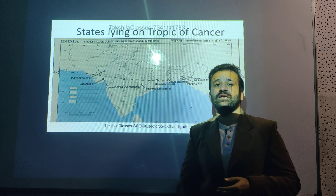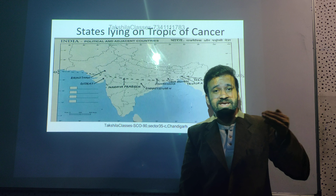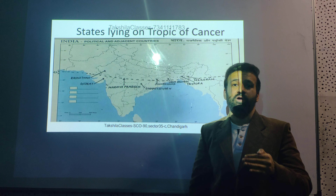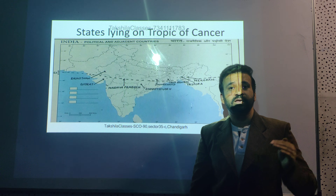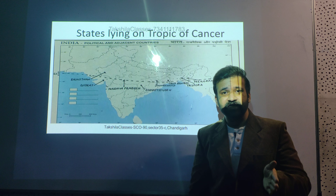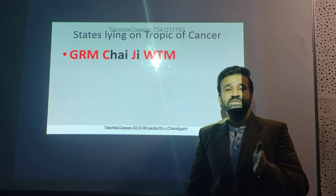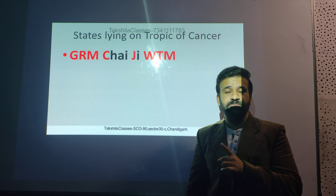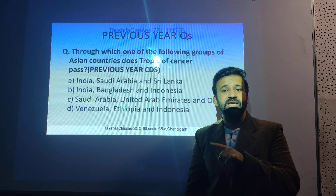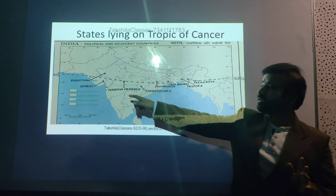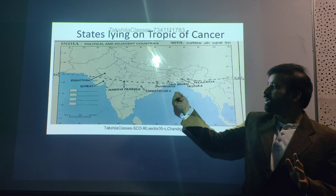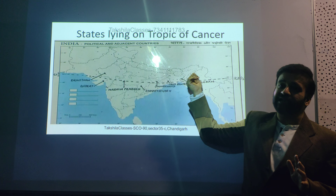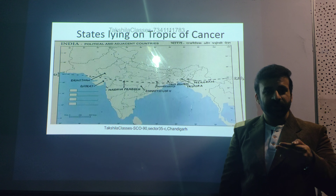Coming to Indian geography — the Tropic of Cancer passes through India. There are eight states of India that lie on the Tropic of Cancer. Use the mnemonic: 'Garam Chaahe Ji, W Team' — Gujarat, Rajasthan, Madhya Pradesh, Chhattisgarh, Jharkhand, West Bengal, Tripura, and M for Mizoram — NOT Manipur, NOT Meghalaya, it's Mizoram. Remember this because the examiner will try to trick you here.